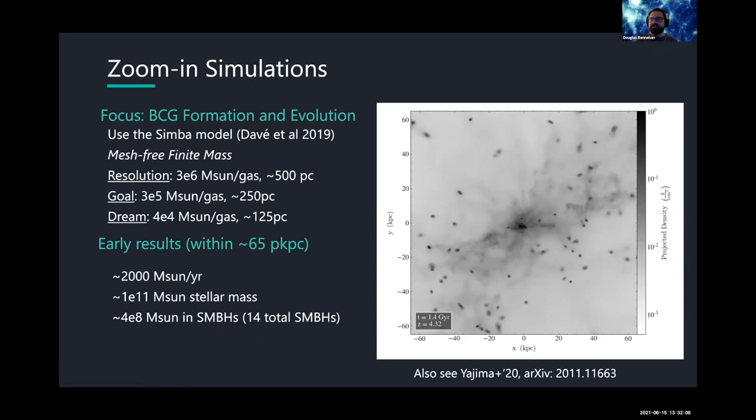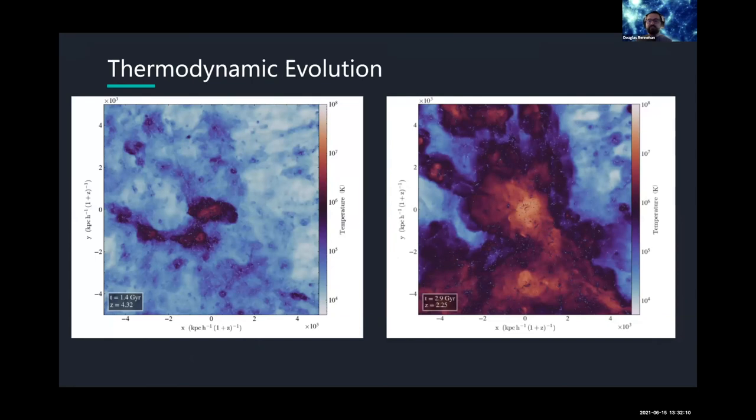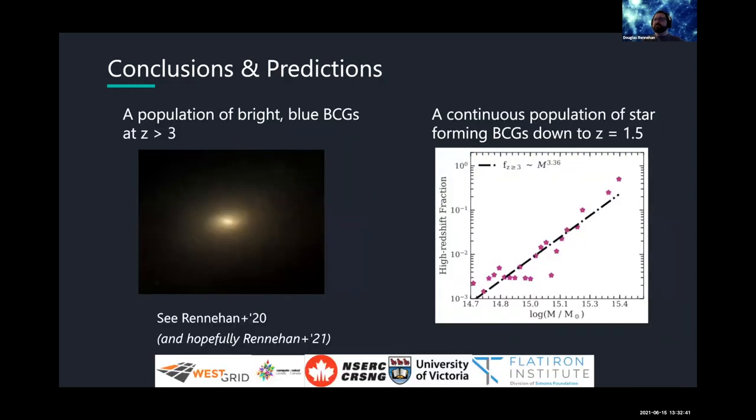So we wanted to look at questions like what is the thermodynamic evolution of this system. So from redshift 4.3 which is the SPT 2349 observation to redshift 2.5 you can see that there's a big difference in temperature. So this is again just a projection but this time temperature and from the dark to the brighter colors that's all of the hot gas and you can see there's a lot more hot gas in that 1.5 giga years that happens. So we want to look at X-ray properties, how the ICM is built up, what causes the ICM to build up like is it the AGN, is it the stars. So these are all questions we're looking at so right now I'll just leave you with my conclusions.